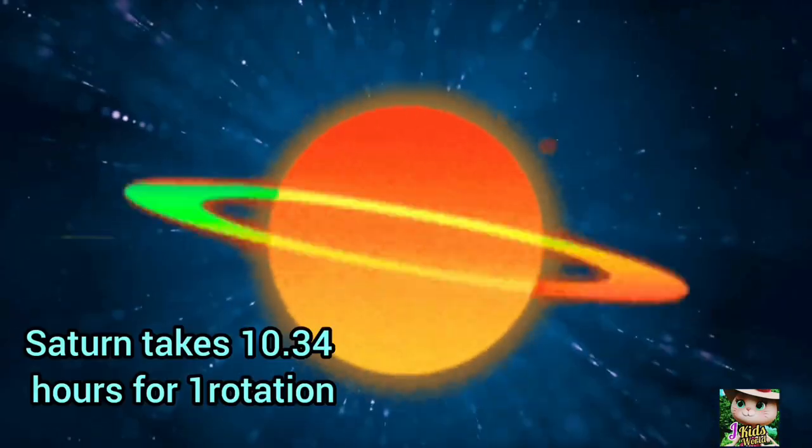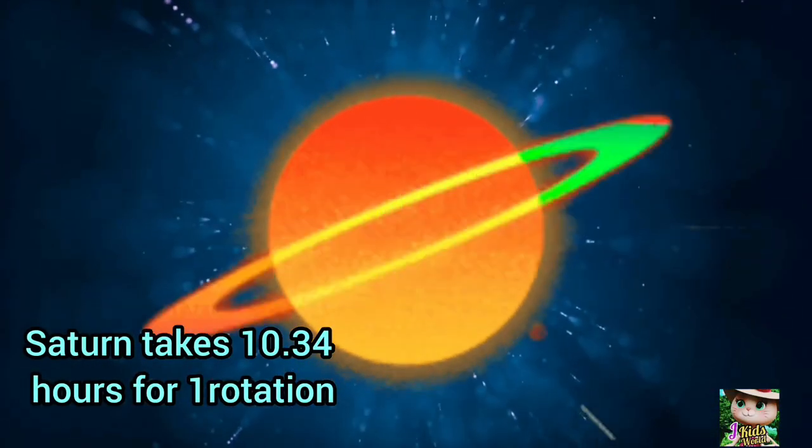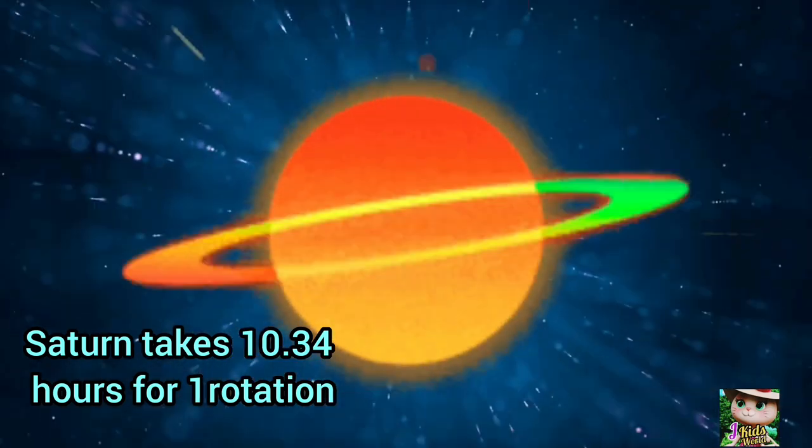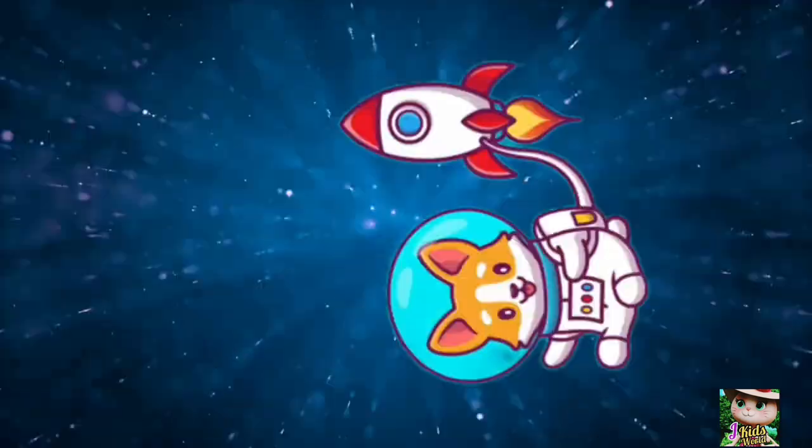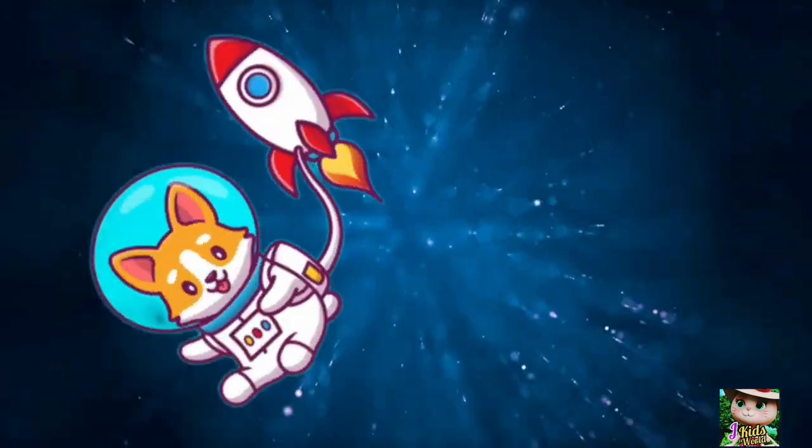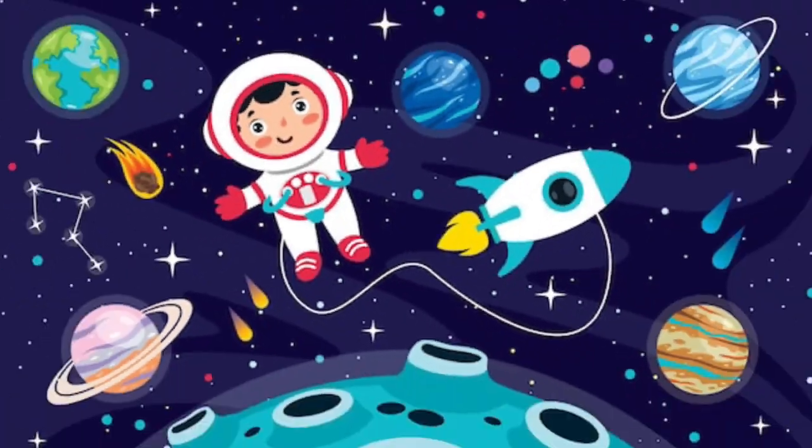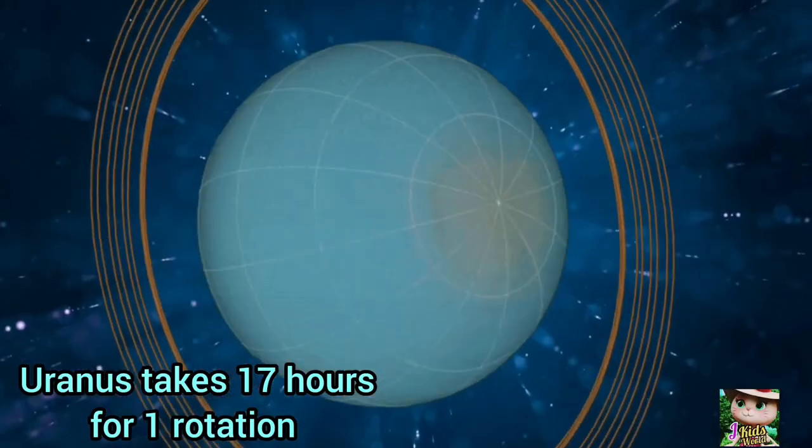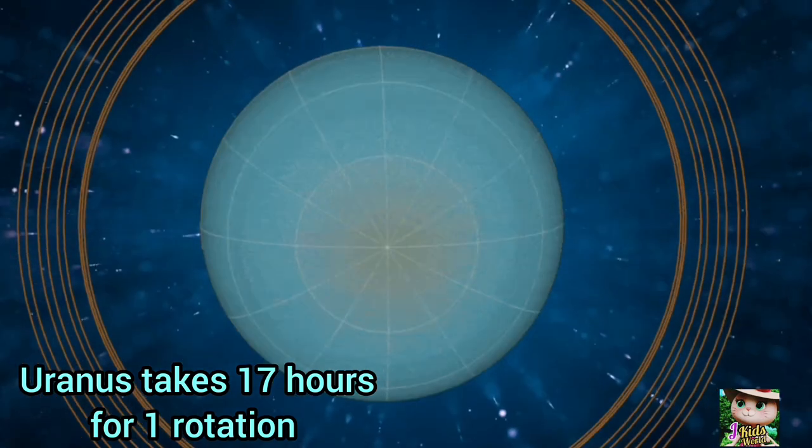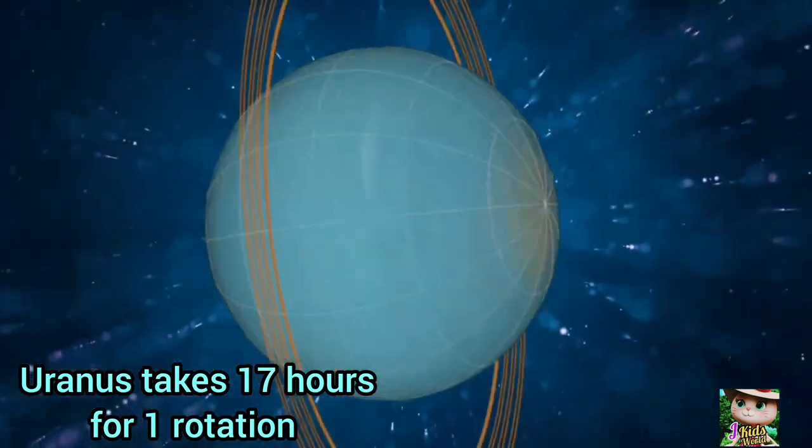Saturn takes 10 hours 34 minutes to complete one rotation. Uranus takes 17 hours to complete one rotation.